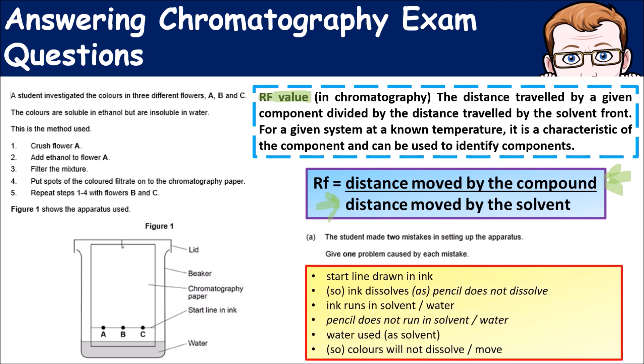If we look at this question: a student investigated the colors of three different flowers, A, B, and C. The colors are soluble in ethanol but are insoluble in water.